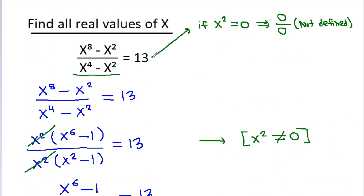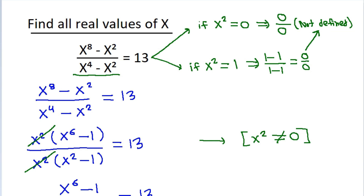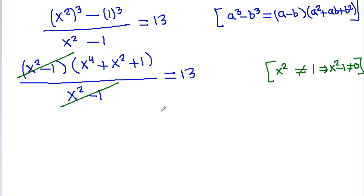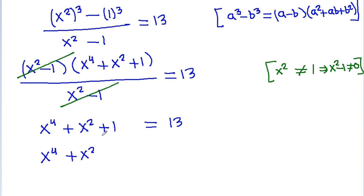If x² equals 1, then we get 0/0, which is not defined. So x² cannot equal 1, meaning x² - 1 cannot equal 0. We can cancel x² - 1, and we get x⁴ + x² + 1 = 13, which simplifies to x⁴ + x² - 12 = 0.